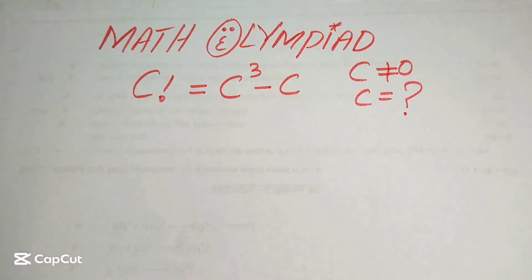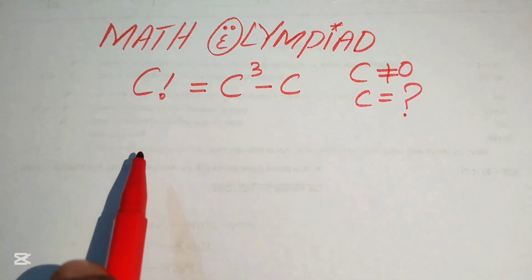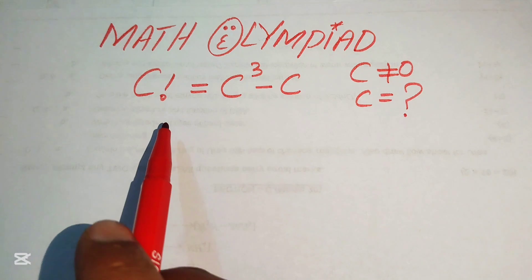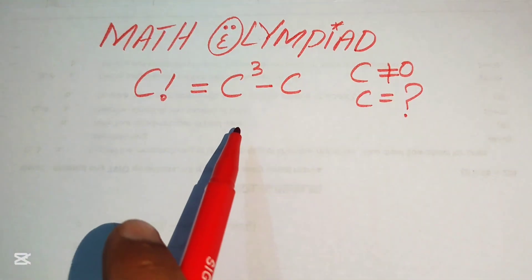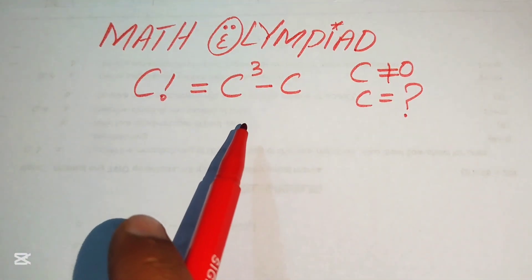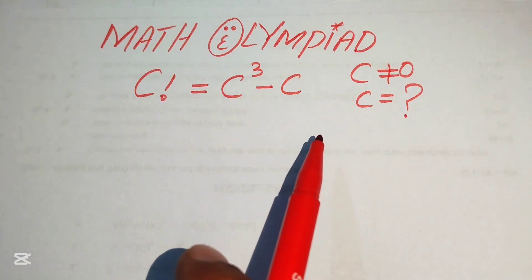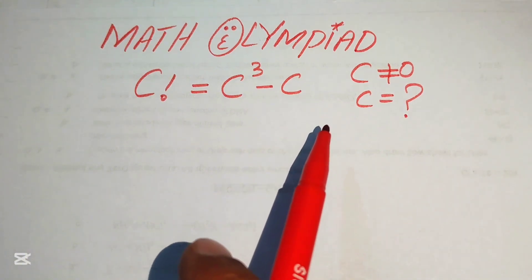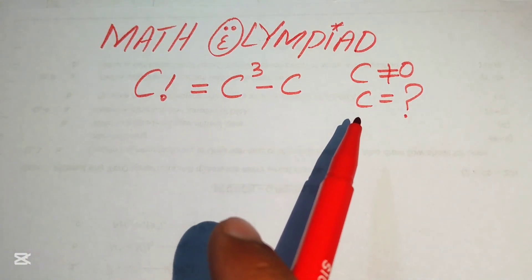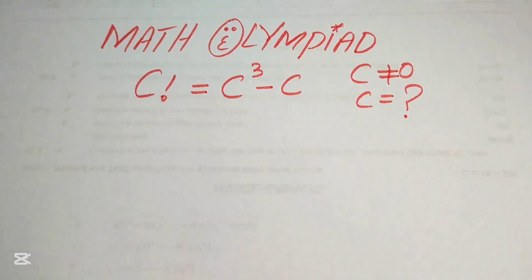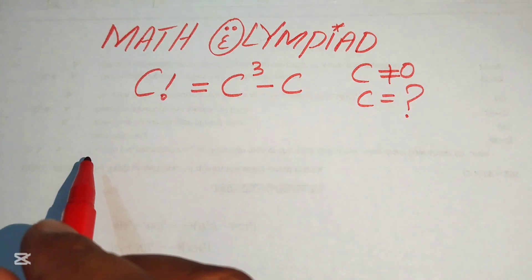Hello everyone, welcome. We solve this algebra problem: c factorial equals c cubed minus c, and we solve for the values of c where c is not equal to zero, meaning we find the non-zero values of c.